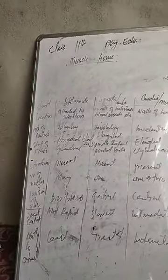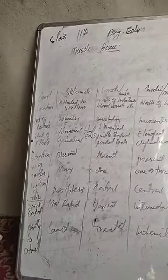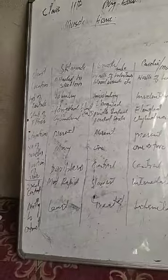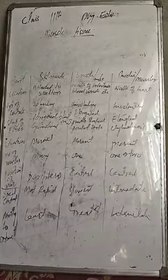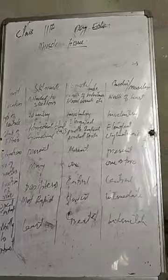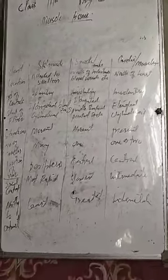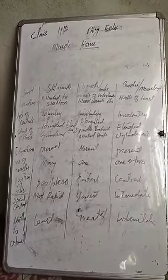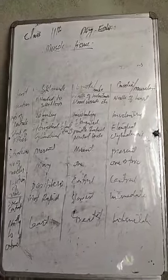If we talk about Muscle Tissues, it is one of the four basic tissues. It is very distinguished from the other tissues by its ability to contract, and by how it performs mechanical work. By its ability to contract, it is very distinct from the other tissues. The structural unit of muscle tissue is the muscle cell.